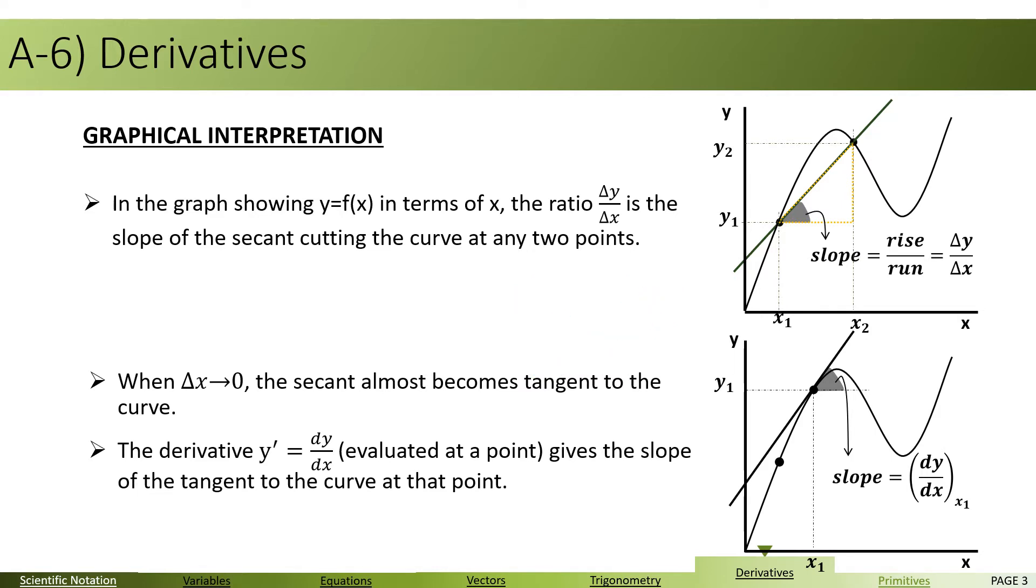And we call that the derivative of y relative to x at this point. So when delta x tends to zero, the secant almost becomes tangent. The derivative y prime, which is dy by dx evaluated at a point, and this is denoted as dy by dx at x1, gives the slope of the tangent to the curve at that point.